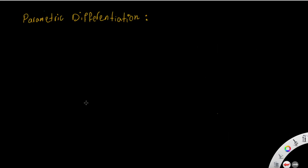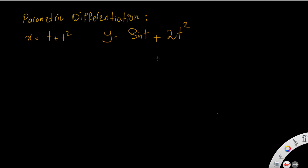Welcome to the video on parametric differentiation. Sometimes the variables x and y are defined in terms of a third variable, like t. For example, x is equal to t plus t squared, and y is equal to sine of t plus two t squared.